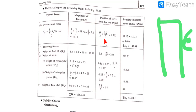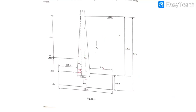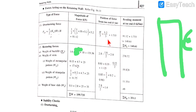The overturning moment MO = PA × H/3 = 81.12 × (5.2/3) = 81.12 × 1.733 kN·m. This moment acts at H/3 from the base, as seen in the figure.